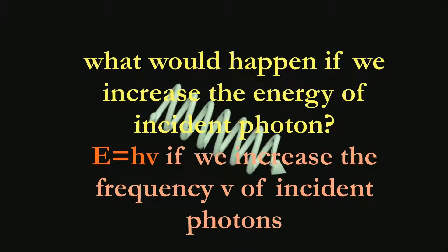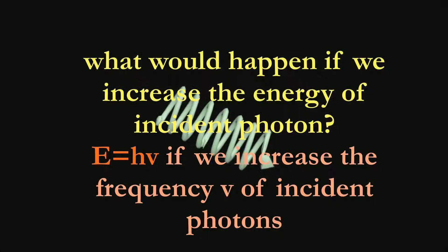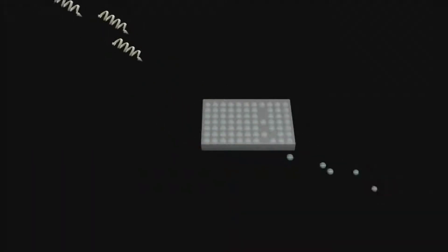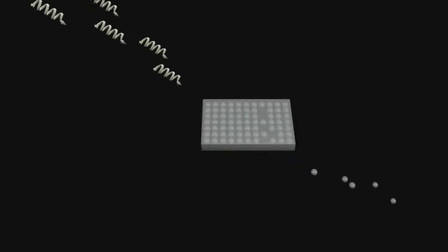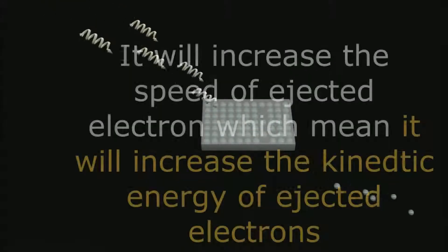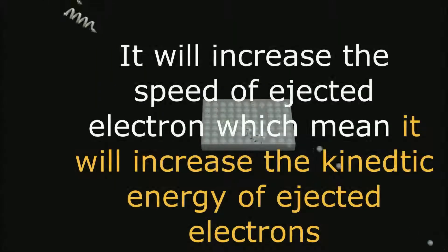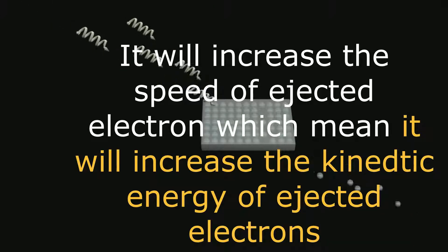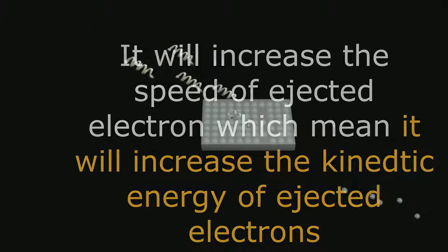Now, what would happen if we increase the energy of the incident photon E equal to hν — that is, if we increase the frequency ν of the incident photons? It will increase the speed of the ejected electrons, which means it will increase the kinetic energy of the ejected electrons.